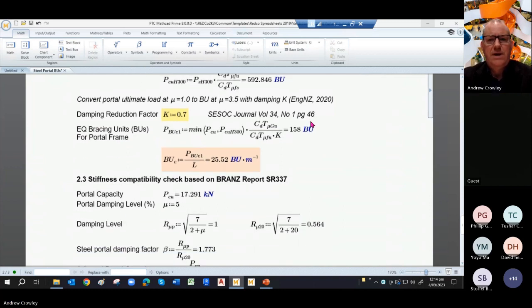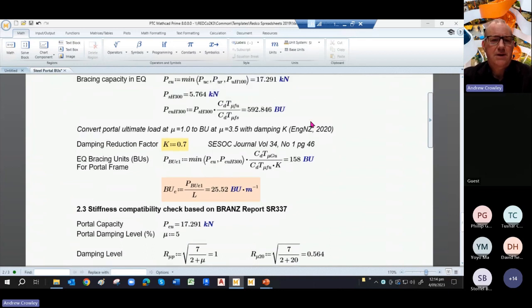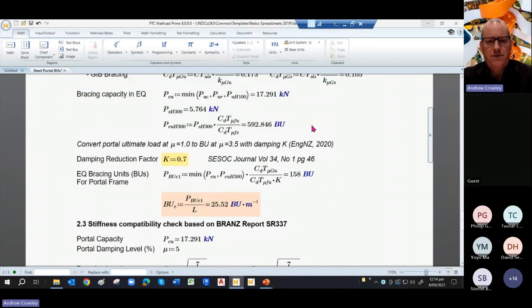However, we need to compare that with the natural ratios that we've got and we convert those into a BU figure of 158 by using this K factor as well. Now the damping reduction factor.